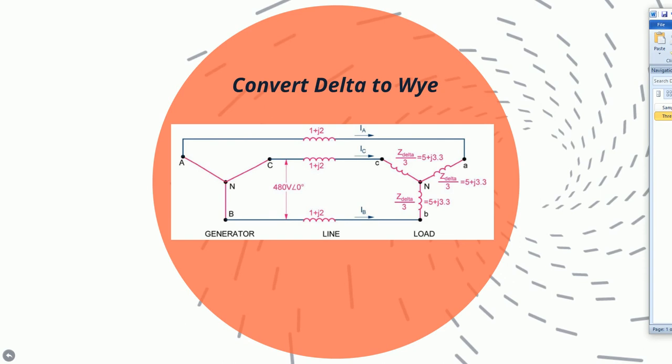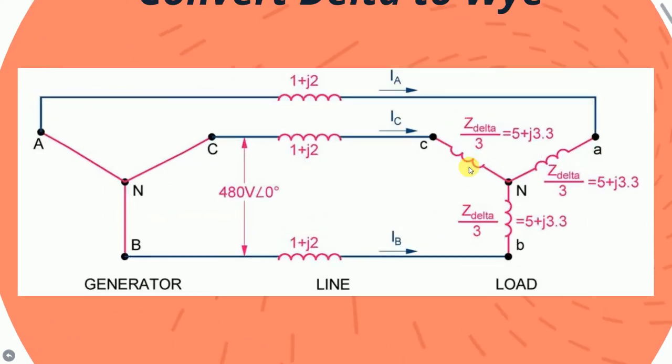In order to complete this problem, you must first simplify it. The first thing you must do is convert the delta load to an equivalent Y load. This will help to make a simpler circuit for solving for the line current. The conversion for delta to Y impedance is to divide the delta impedance by 3, as shown here.